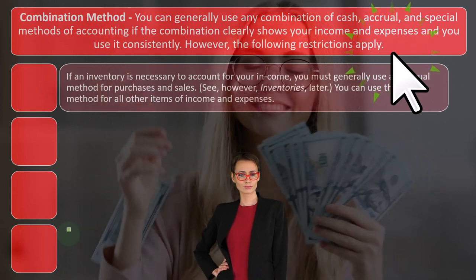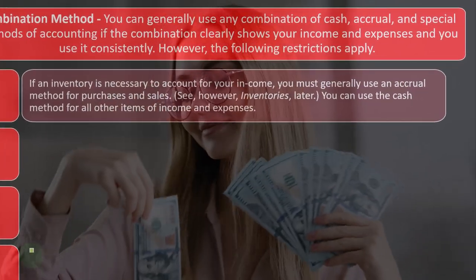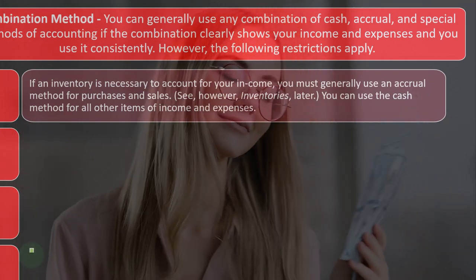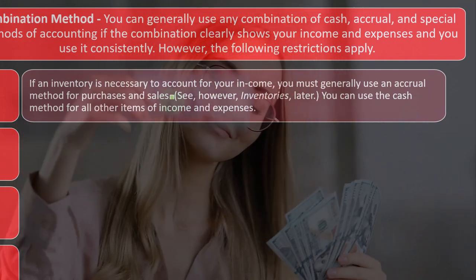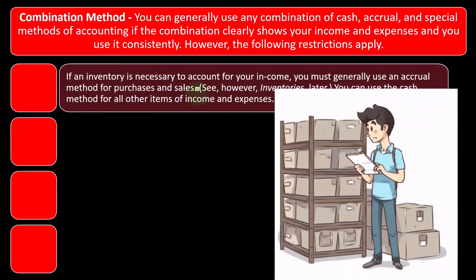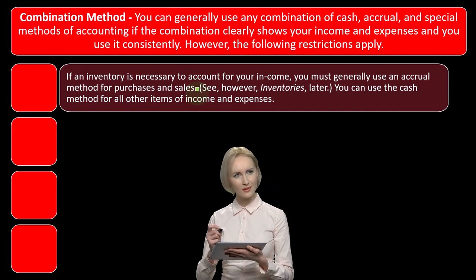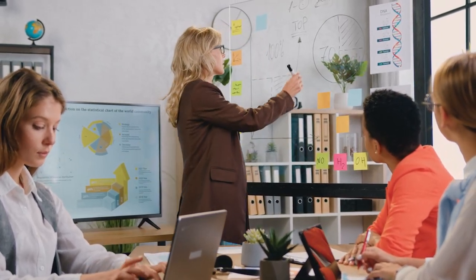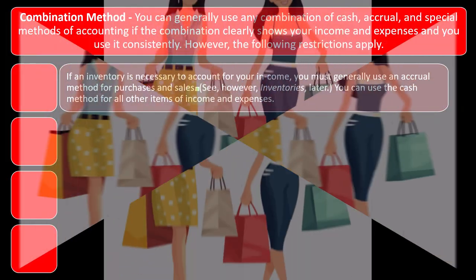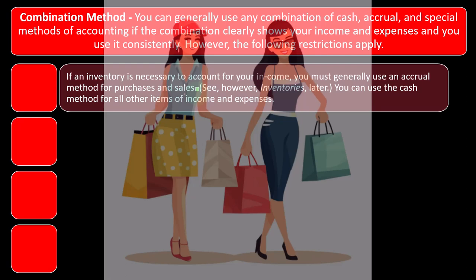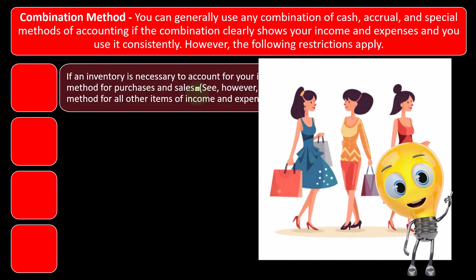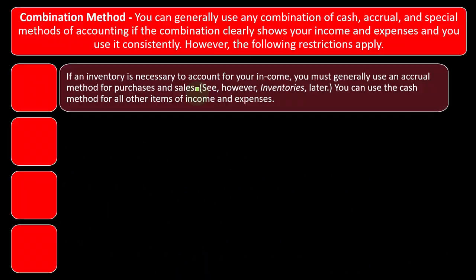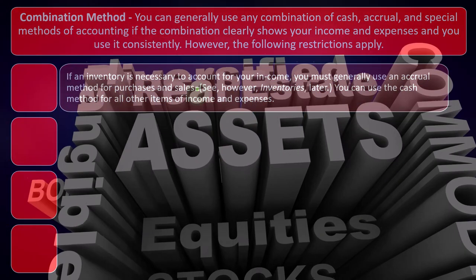However, the following restrictions apply. If an inventory is necessary to account for your income, you must generally use an accrual method for business and sales. If you're dealing with inventory, you've got to be careful on the method you choose, because if you were on a cash method, you would just expense inventory when you buy it. But if you're holding on to a substantial amount of inventory, it makes sense to put it on the books as an asset — and putting it on the books as an asset is an accrual type of thing.